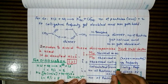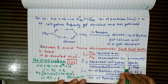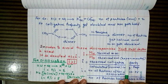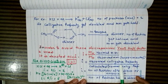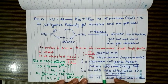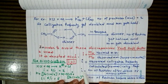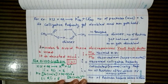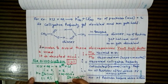The Van't Hoff factor i is defined as the ratio of the normal molecular mass to the observed (experimental) molecular mass. Since molecular mass is inversely proportional to colligative properties, i also equals the observed colligative property divided by the calculated (normal) colligative property. The Van't Hoff factor can also be calculated by dividing the number of particles after dissociation or association by the number of particles before.